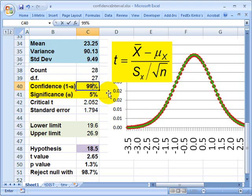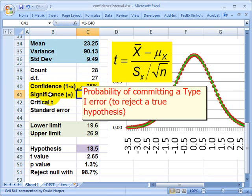We also call the significance the alpha, so that the confidence is 1 minus the alpha. So for example, if my confidence is 99%, then my significance, my alpha, is 1%.